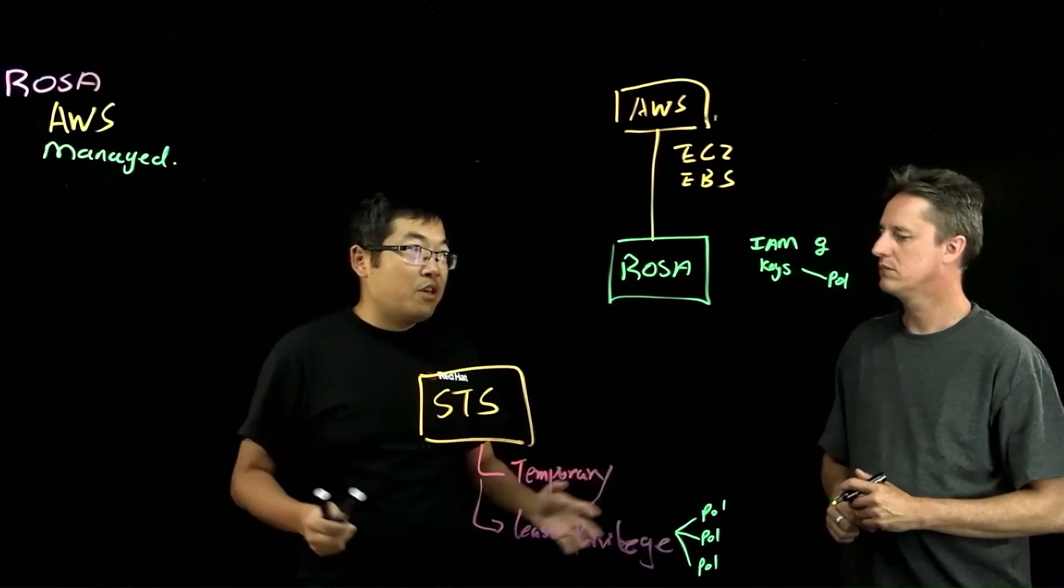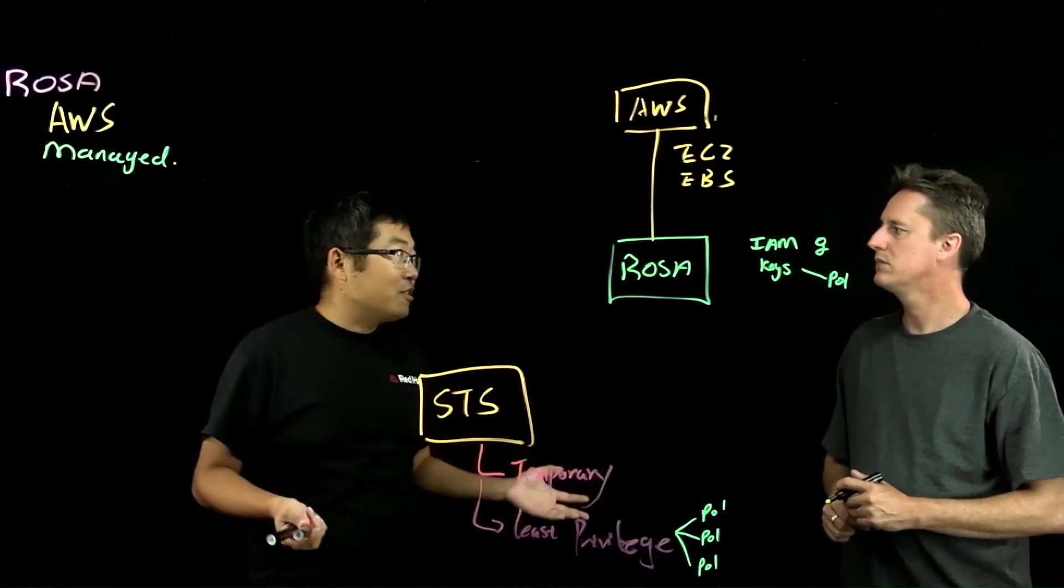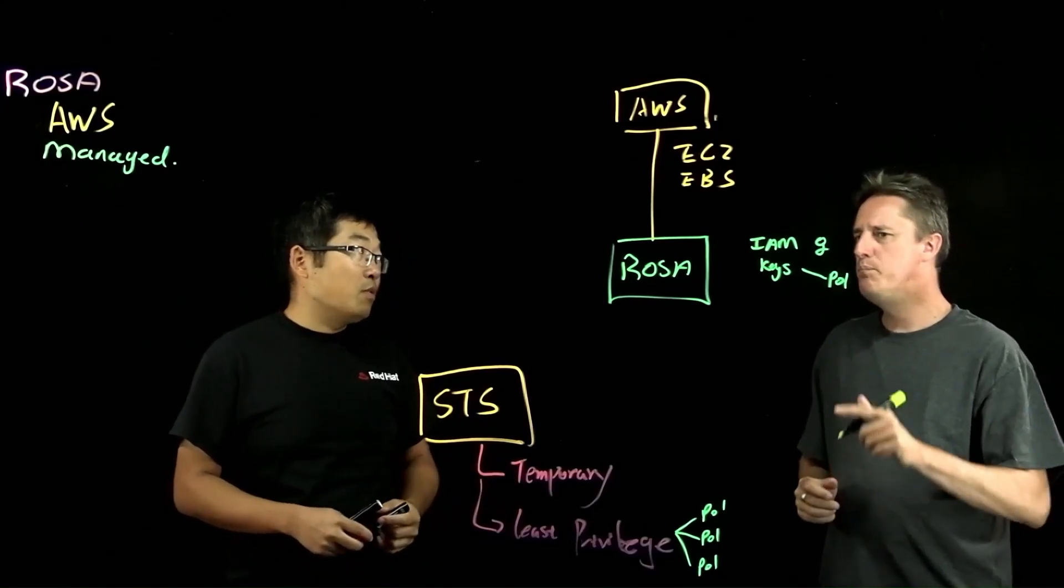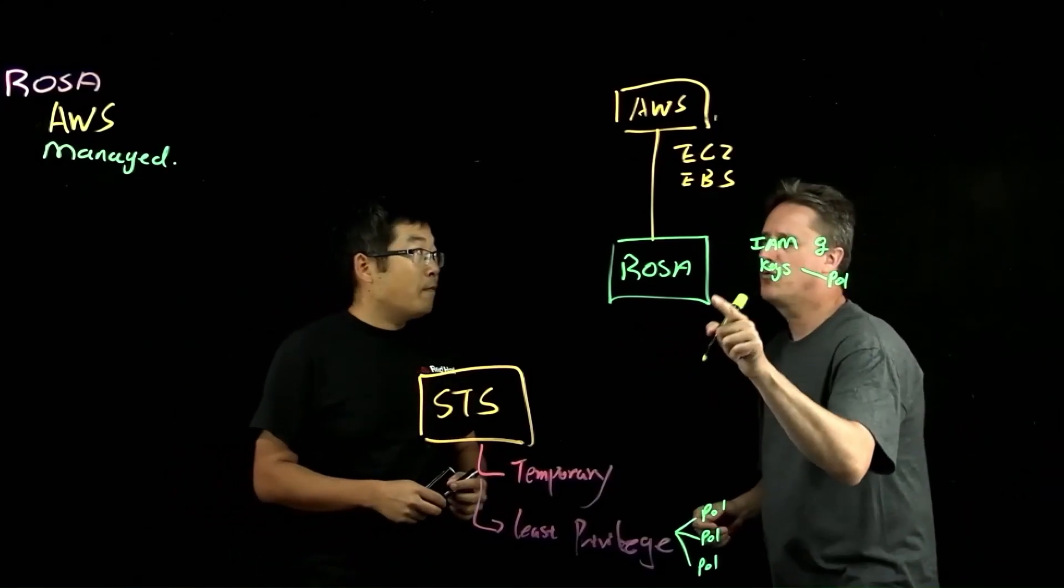Instead of just having a big giant key with all the policies attached. So that's how we actually get least privileged policy to be implemented. But the service would need to interact with STS. So there's a request process here. Is there any permission building blocks needed to actually talk to STS?